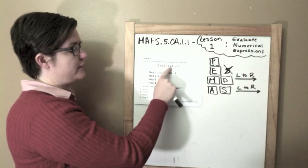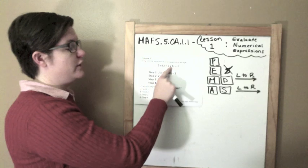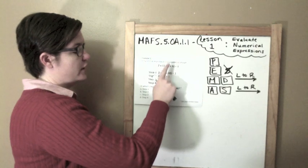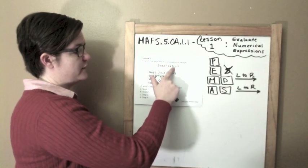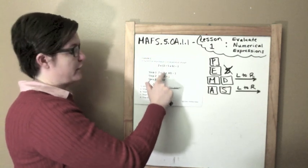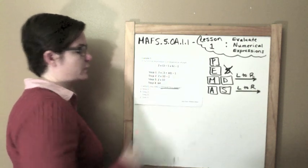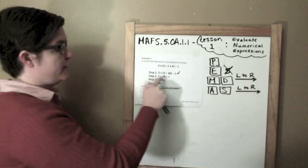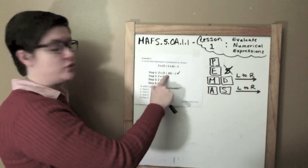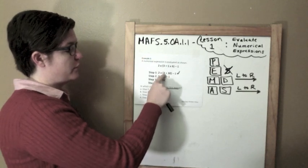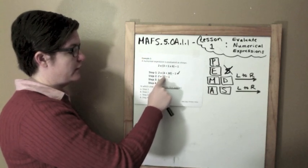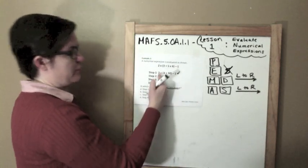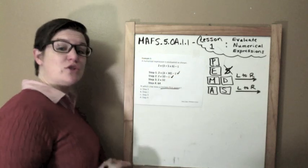So they would do 5 times 6 first, which this person did. They brought the 3 down, brought the 2 down, brought the minus 1 down. So step 1 looks good. All right, so moving on to step 2. Next, we still have parentheses that we need to address. So 3 plus 30 would be 33, and that is correct. They did the next step correctly. They brought down the 2. They brought down the minus 1. So step 2 is correct. Where is the mistake?